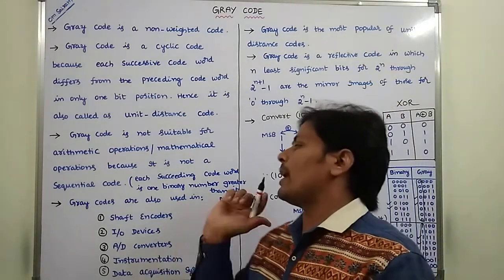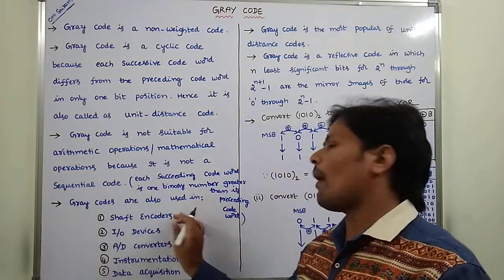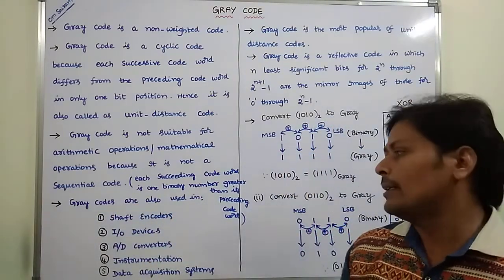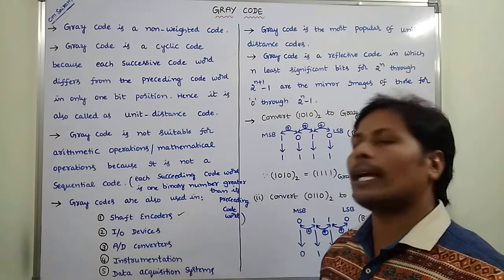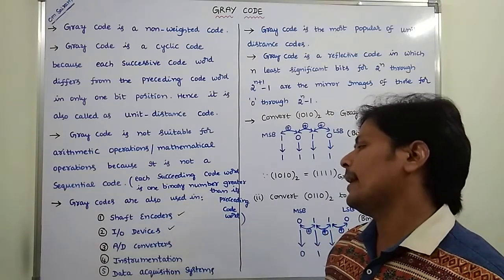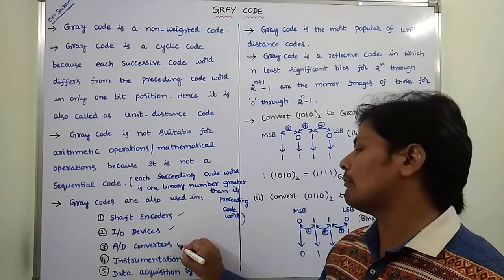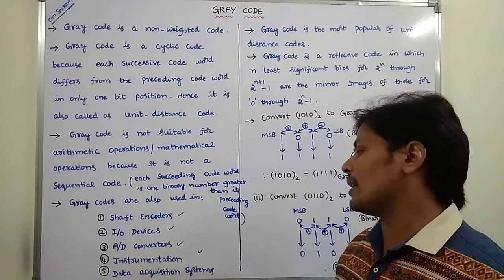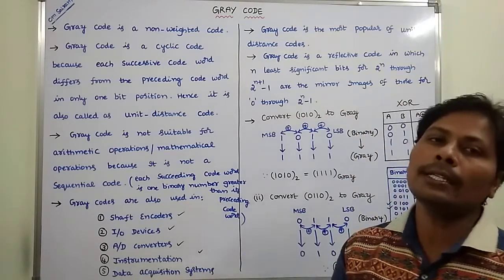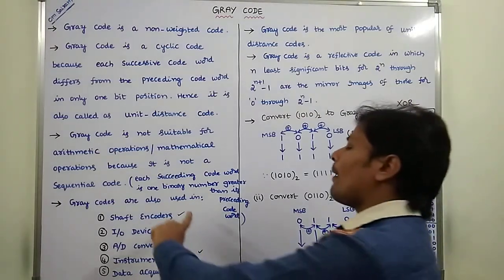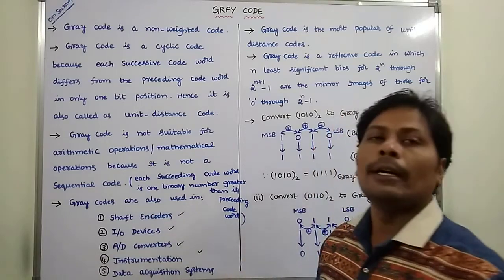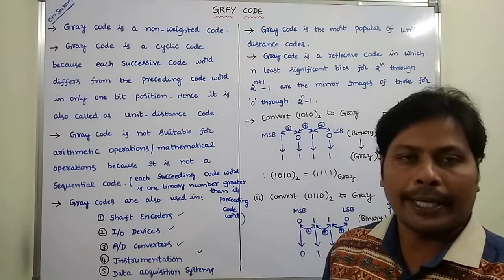Grey codes are also used in shaft encoders, I/O devices, A-to-D converters, instrumentation, and data acquisition systems. These are the applications of grey code.